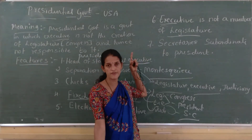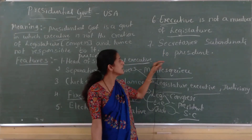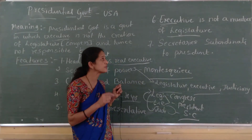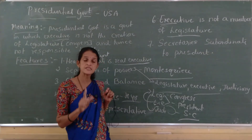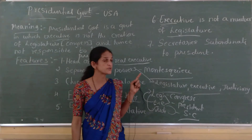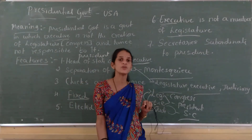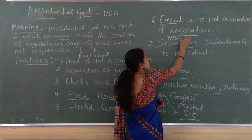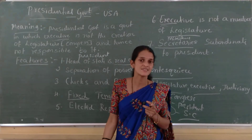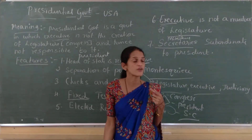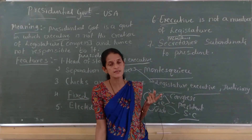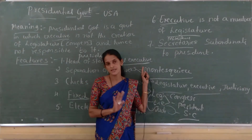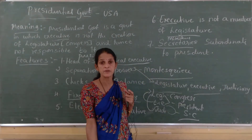The seventh and last feature of presidential form of government is that secretaries are subordinate to the president. In presidential form of government, secretaries — who are the equivalent of ministers — are subordinate to the president and are not responsible to the legislature. They are responsible only to the president. All secretaries are appointed by the president of America, which is why they are responsible only to the president, not to the legislature.